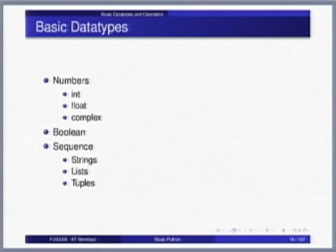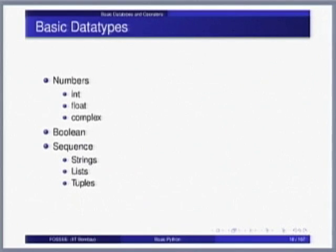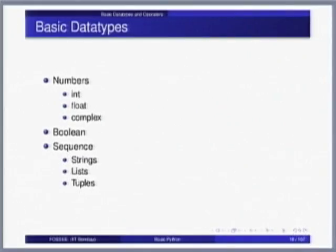The basic built-in data types you will use most often are the following: numbers — integers, floating point numbers, complex numbers — they are all built in. There is also a Boolean data type. Then there are sequences: strings, lists, and tuples. These are the basic data types. There are slightly more advanced data types that are part of the built-in language, and we will look at these basic ones first before moving to the advanced ones.